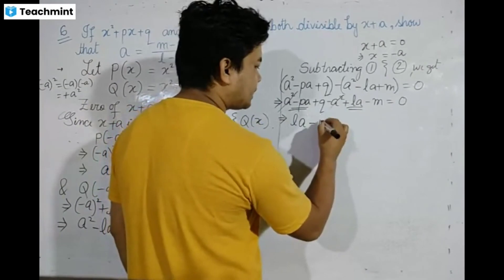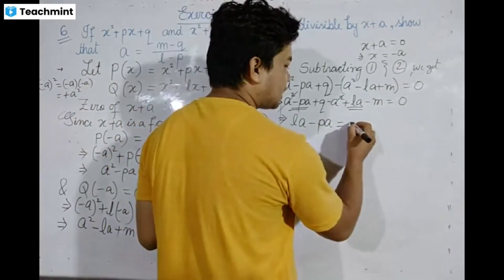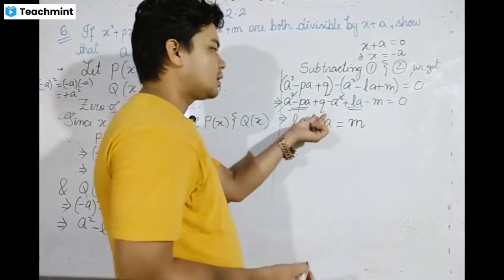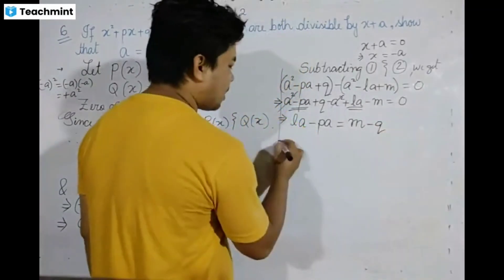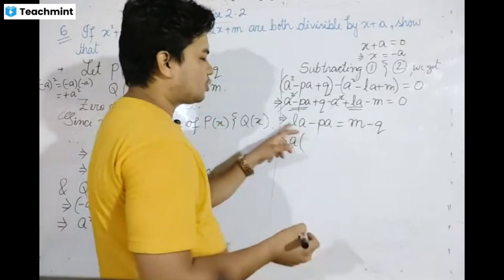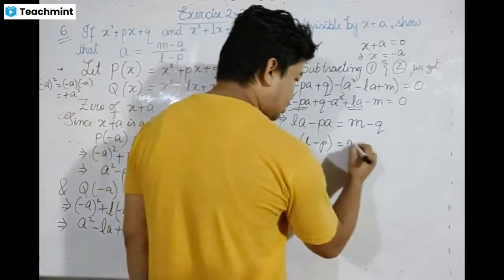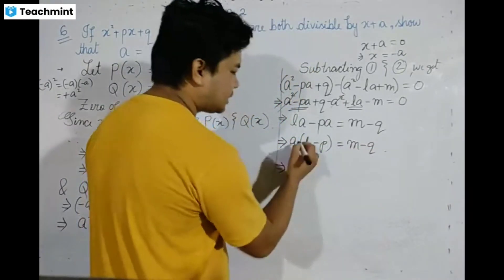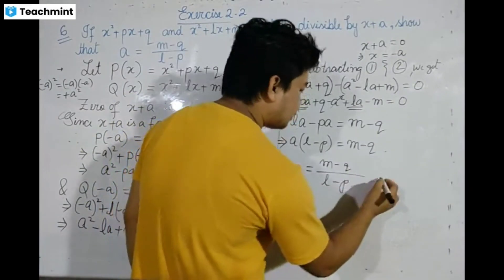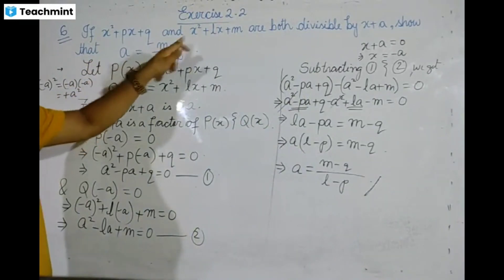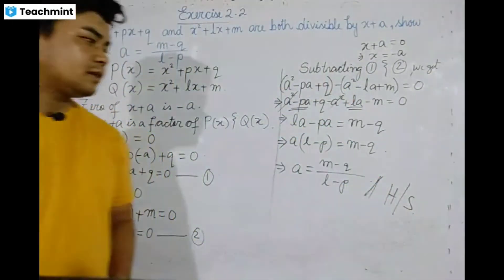So l minus p times a equals m minus q. Therefore, a is equal to m minus q divided by l minus p. Hence proved.